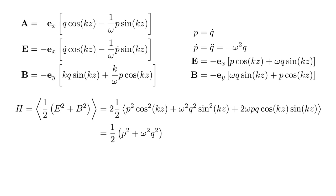p² cos²(kz) + ω²q² sin²(kz) + 2ωpq cos(kz) sin(kz). The cosine times sine term has zero average. Cosine-squared and sine-squared both average to one-half. So the field energy is (1/2)(p² + ω²q²).